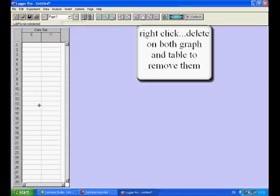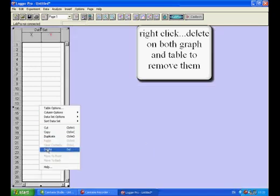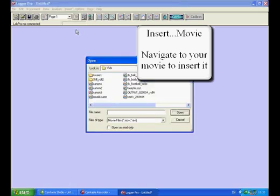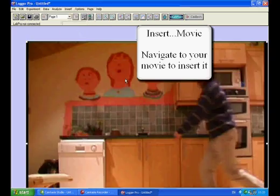To analyze a movie, remove the graph and table by right-click delete on each, then insert movie. In this case, a kick.